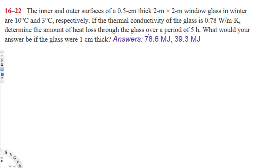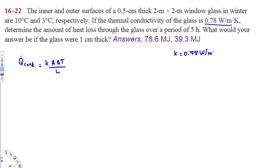First, let's calculate the heat transfer rate — how much heat is lost per second. We use the equation Q̇ = K·A·ΔT / L, where Q̇ is the heat transfer rate. The given values are: K (thermal conductivity) = 0.78 watts per meter Kelvin.